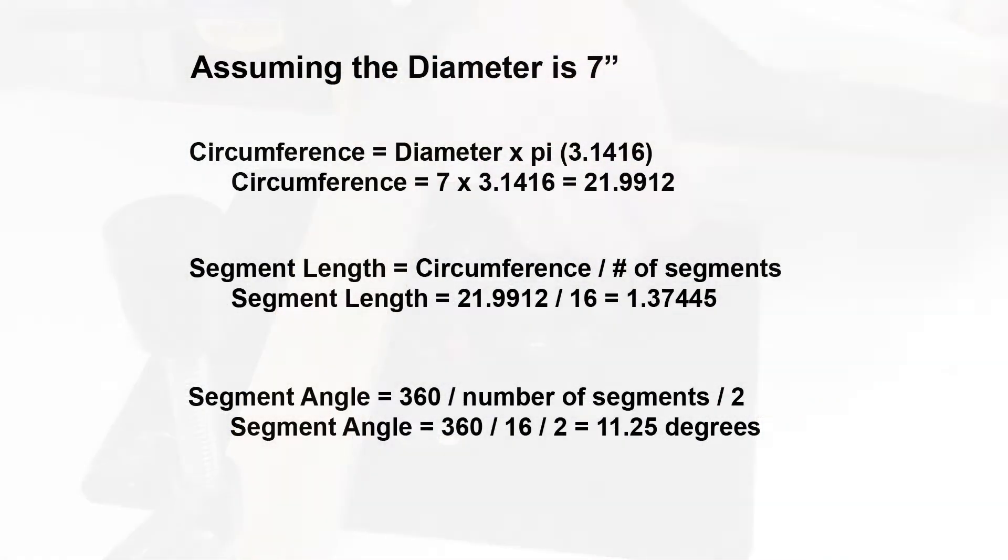Before I go any further, I'd better explain the choice of angles to cut the segments at. This is the math used to decide what measurements to use to cut the segments. Now look at the highlighted area. The segment angle is equal to 360, the number of degrees in a circle, divided by the number of segments and then divided by two.